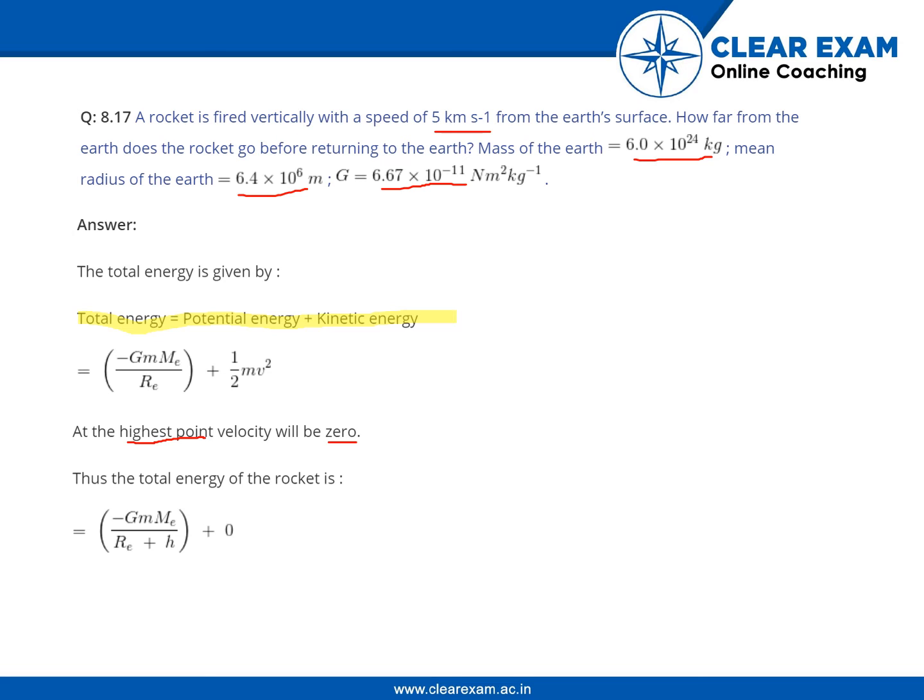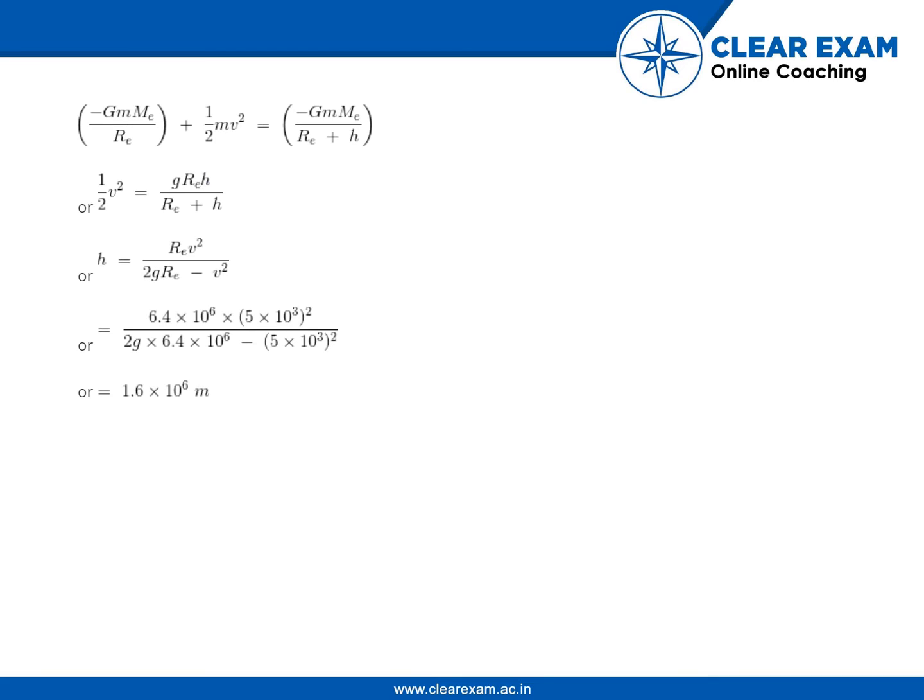Then the total energy of the rocket will be -GMₑm/(Rₑ + h) plus zero, because the kinetic term becomes zero. Now we will use the conservation of energy: the total energy initially at the Earth's surface equals the total energy at height h.